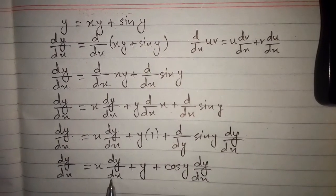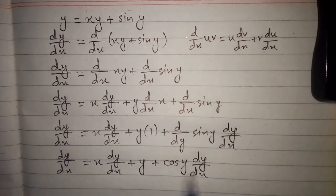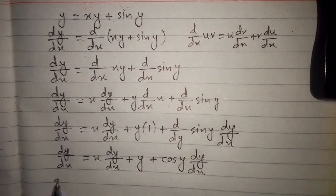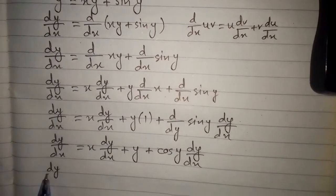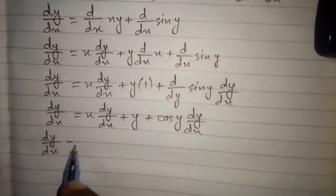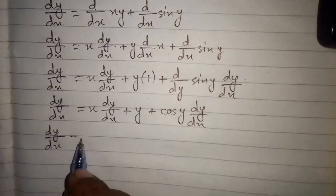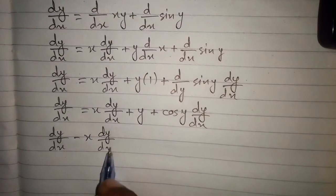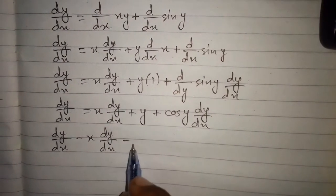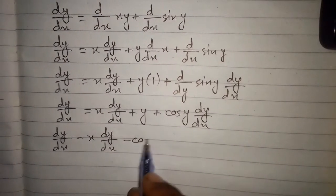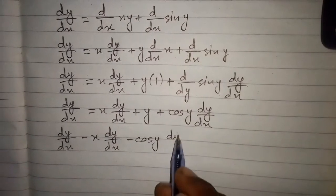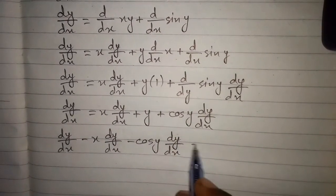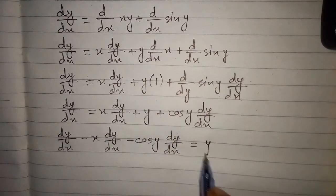Now we can take this term and this term to the other side of the equation. So we have dy/dx minus x times dy/dx minus cos(y) times dy/dx is equal to y.